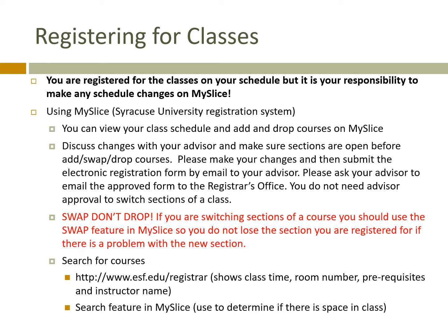You are registered for the classes that you see on your schedule, but it is your responsibility to make any changes that you need to finalize your schedule for this semester. You do that on MySlice, which is a Syracuse University registration system. Since you can take classes at Syracuse University, we have you register on one system to make it easier for you. That's where you go to view your schedule or make any schedule adjustments.